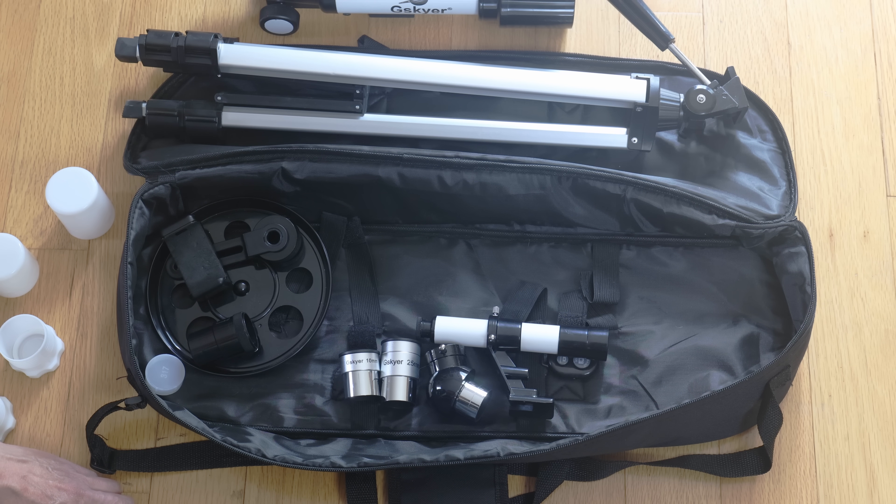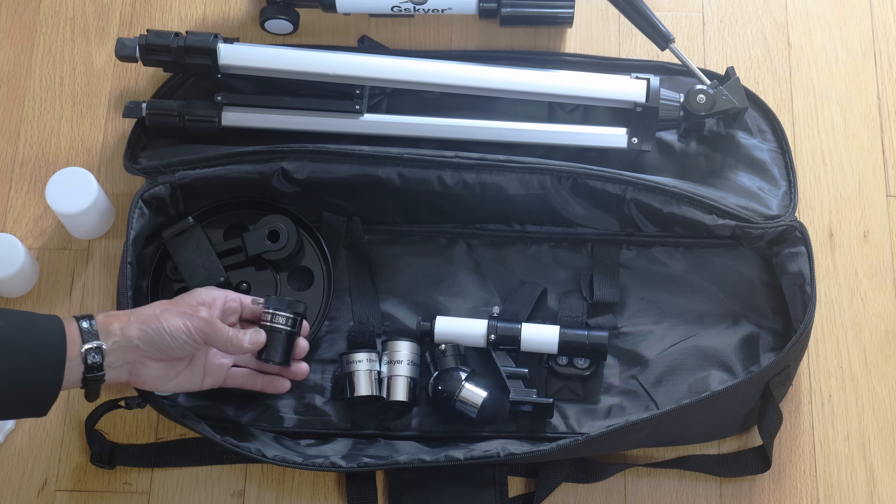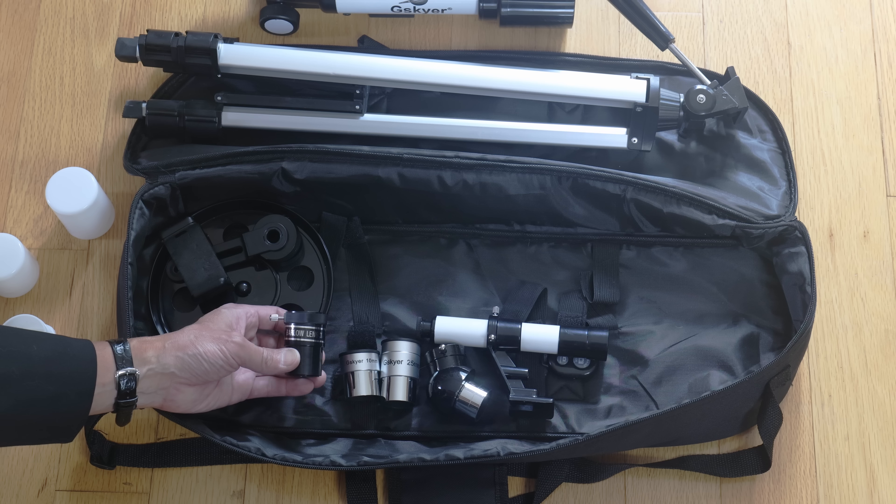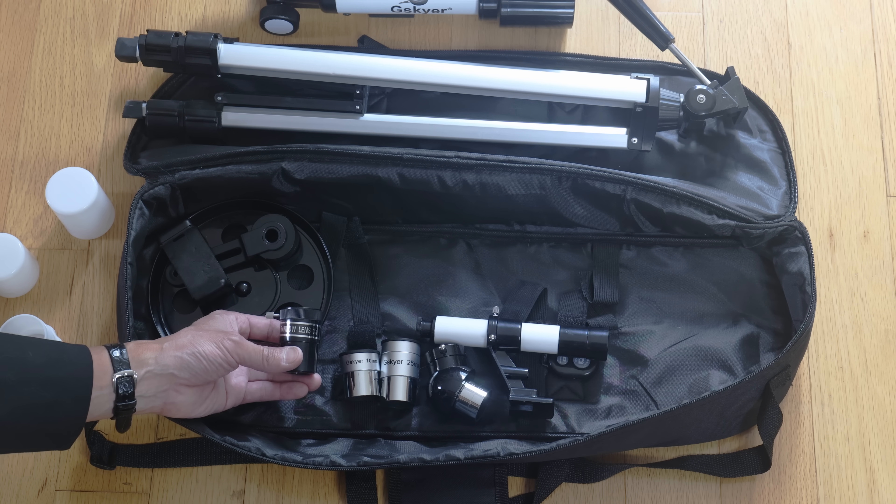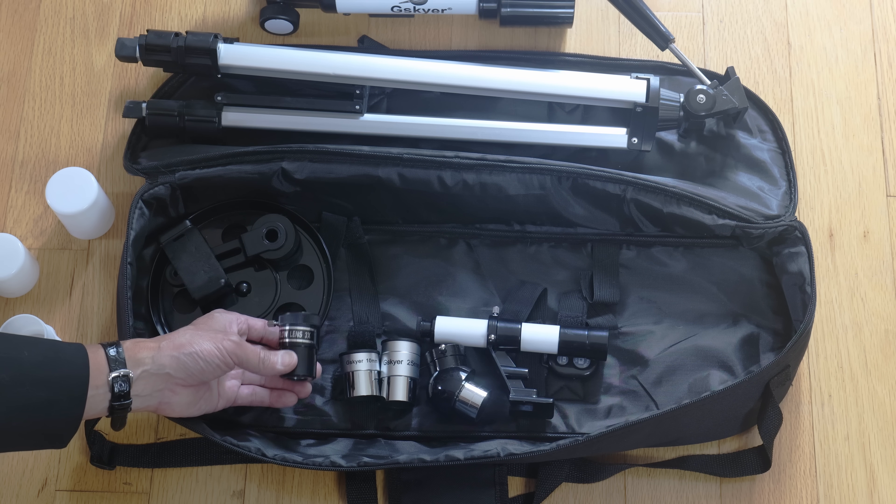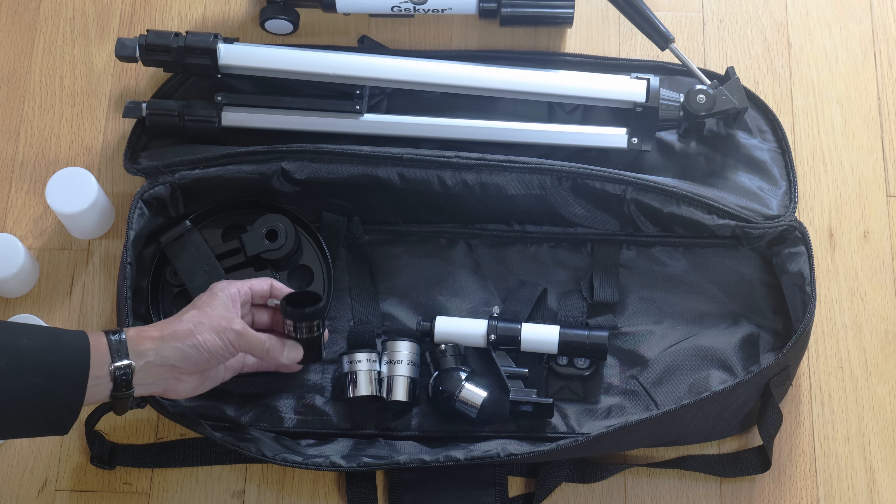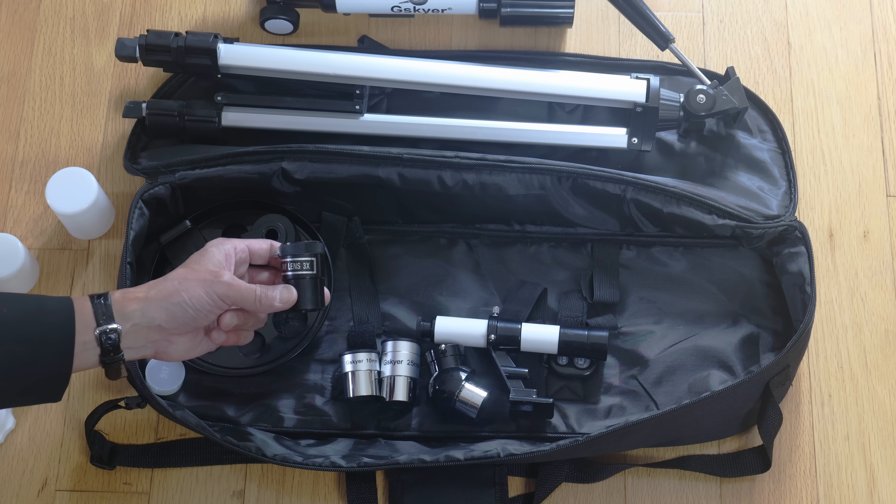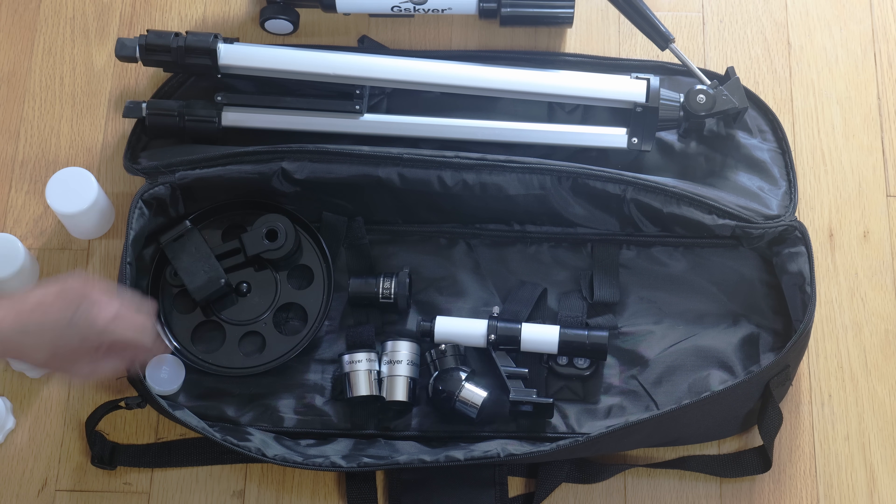All right. So there's two indications that we have a telescope that is in the borderline toy slash junk category. And number one is the dreaded Barlow lens. Oh my. This is a cheap piece of plastic. 3X. This triples the power of any eyepiece that you put on it. This is here for marketing purposes. They know if they can write that on the box that it might entice you to buy it. This has traditionally been the indicator of junk.